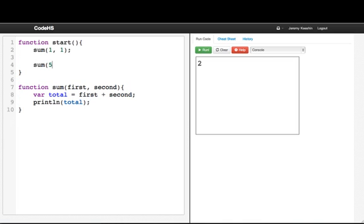If I write sum 5, 10, we'll get 2, and then 15 printed out. Here you see that you can pass any number, and we've written the recipe for how to sum two numbers.